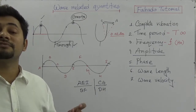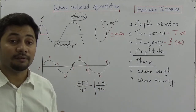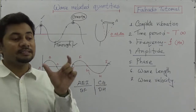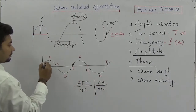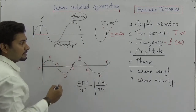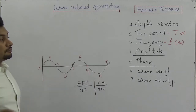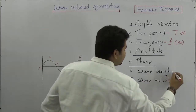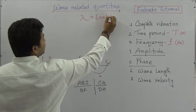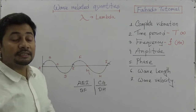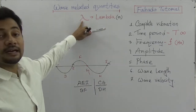The instantaneous condition of wave transmitting particles in a medium is known as the phase of those particles. Now, wavelength — very important. Wavelength is the distance between two points of the same phase, for example from B to F. Wavelength is expressed by lambda (λ), written as the Greek letter lambda, and the unit of lambda is meter because it is a length.